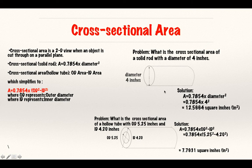If I cut this place in half, I should have the same exact surface. I took the solution from the previous slide and placed it here. What is the cross-sectional area of a hollow tube with an OD of 5.25 inches and an ID of 4.20 inches?